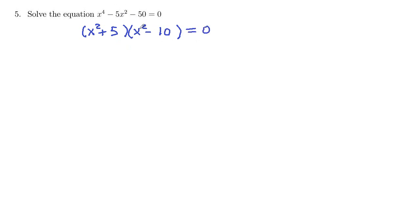Now we've got a product that equals 0. So either x squared plus 5 equals 0, or x squared minus 10 equals 0.